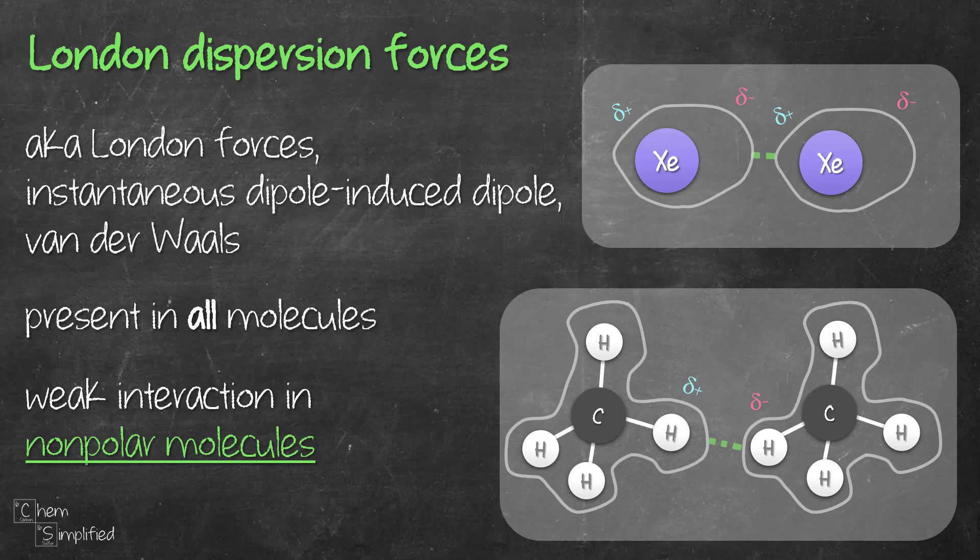Now if we were to compare the strength of London forces between non-polar molecules, we'll compare them using their molecular weight. That means the heavier the molar mass, the stronger the London forces. So now when we discuss the rest of the intermolecular forces, we're assuming that the molecules that we're comparing, they all have similar molar mass.